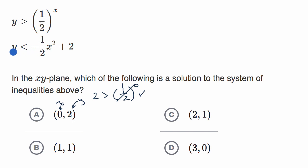And let's look at the second one. Is it in fact the case that y, and in this situation y is two, that two is less than negative one half times, in this case, zero squared, zero squared plus two? So let's see. If we have negative one half times zero squared, zero squared is just zero. So this whole thing's going to be zero. So is it true that two is less than two?